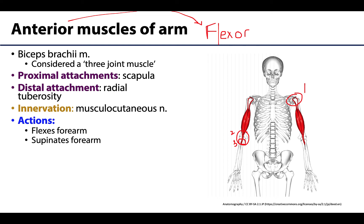We typically think of the biceps brachii's actions as flexion of the forearm or flexion of the elbow joint. But since it crosses the proximal radial-ulnar joint and attaches on the radius — the movable bone for those radial-ulnar joints — it can also supinate the forearm. It gets forgotten that biceps brachii plays a significant role in supination. The long head can also play a small role in flexion of the shoulder joint.